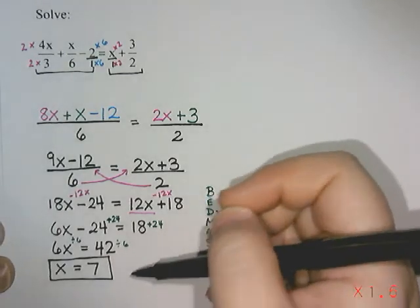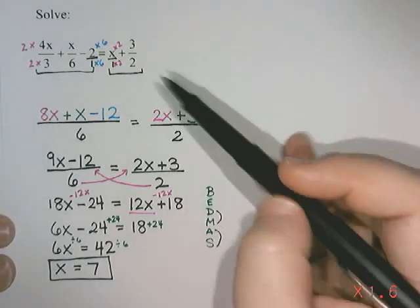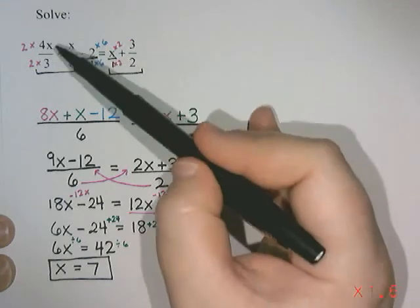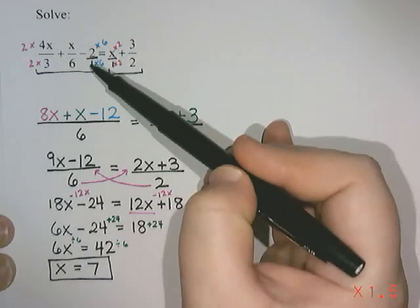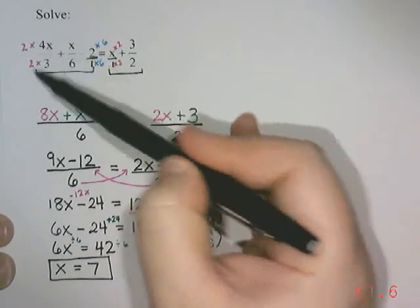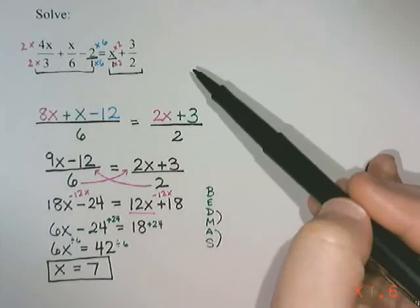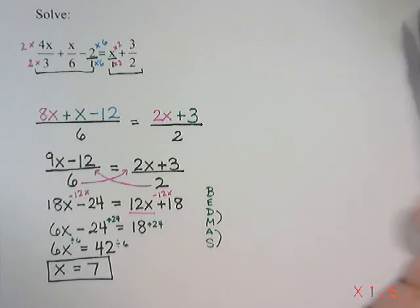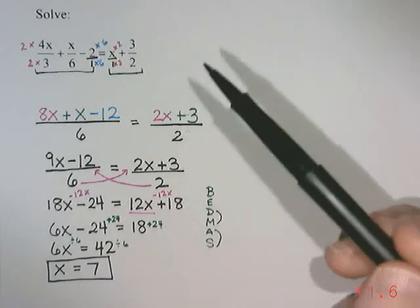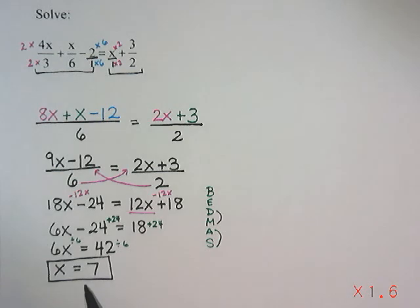If I want to check to see if my answer of 7 is correct, I can go back to the original equation, put 7 in everywhere I see an x, then work out the left side, work out the right side, and hopefully I get the same number. That way you'll know my answer is correct. But the question did not ask me to check, it just said solve. So I'm just going to leave it at an answer of x equals 7. And that's solving equations with fractions.